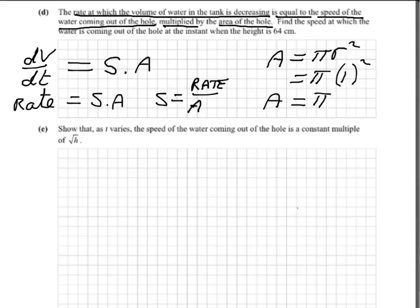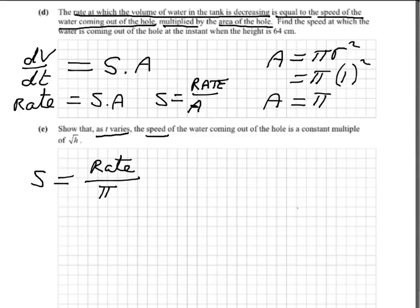Finally, part E: show that as t varies, the speed s is a constant multiple of root h. As t varies — that's an important point. We're looking for speed, and from the last part we have a formula for speed. So yet again parts of questions are linked together. The speed is the rate divided by the area, which is pi.